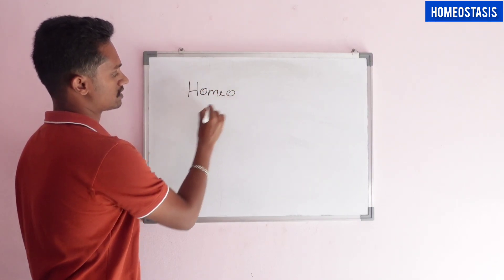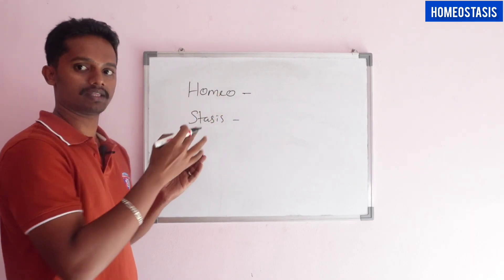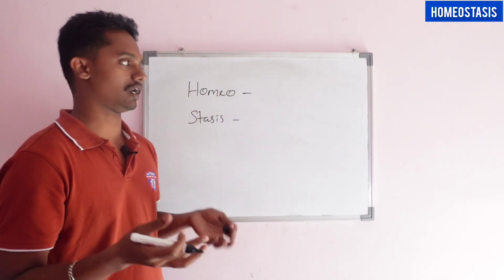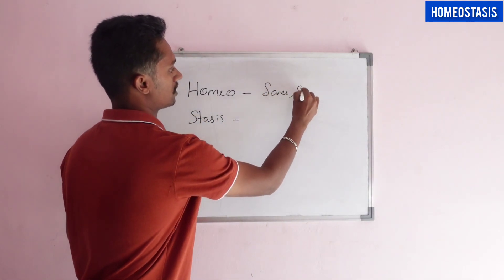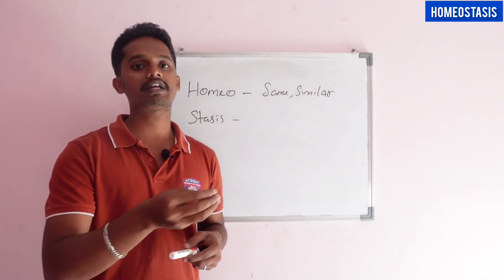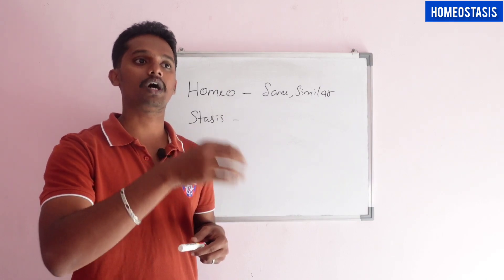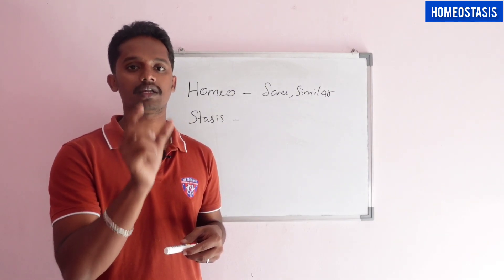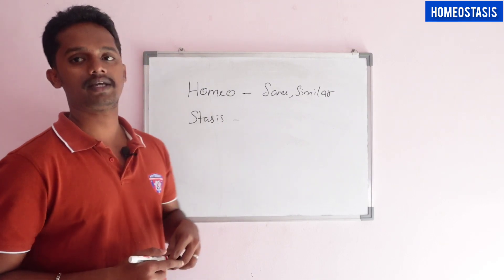Homeostasis — you can write it as two words. Homeostasis means 'same' or 'similar.' For example, homeo means similar. What does stasis mean?